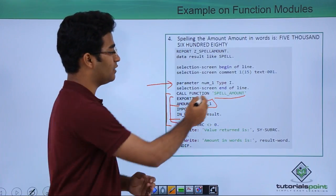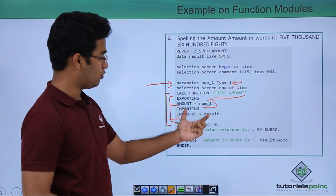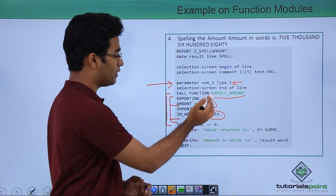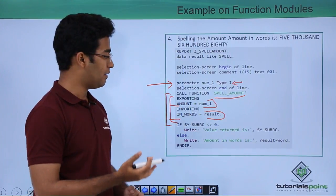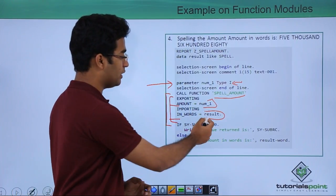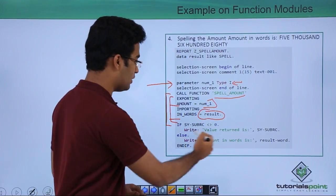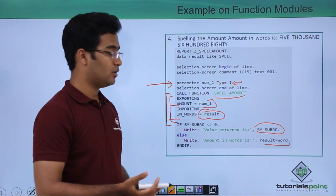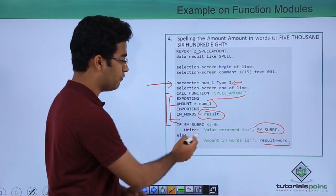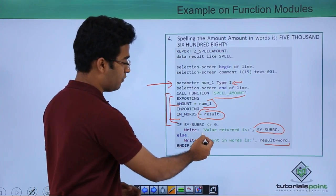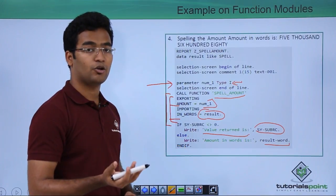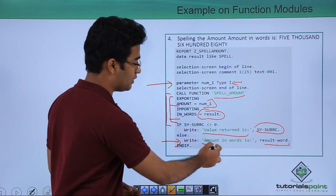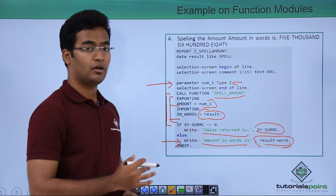In the exporting parameters, we have mentioned num1, which is set as a parameter of type integer. Similarly, we have provided our importing parameter, that is result. Whatever input we are giving is provided in the exporting parameter, and whatever output we are getting comes in the result. We are populating the result in our write statement. If sy-subrc is not equal to 0 the program did not execute successfully, but if sy-subrc equals 0 then the else condition triggers and the result-word is populated.